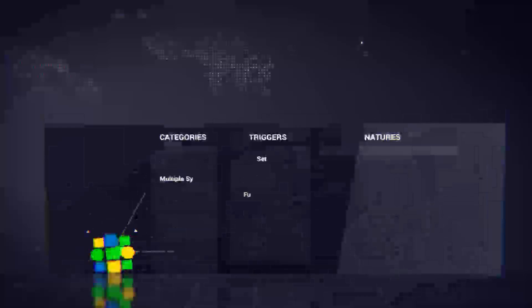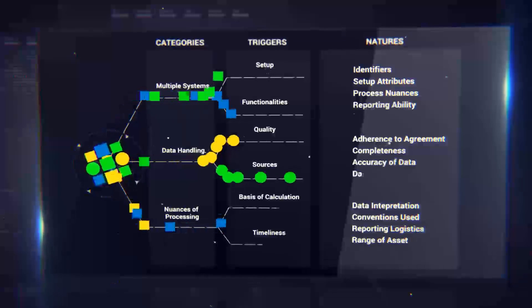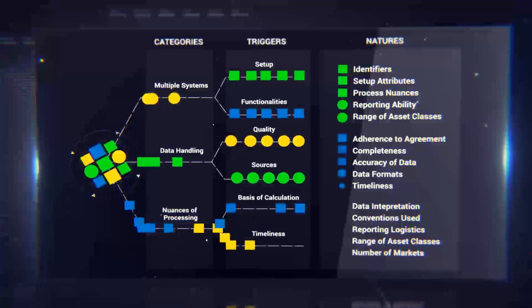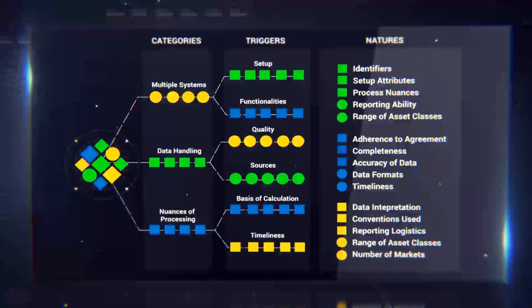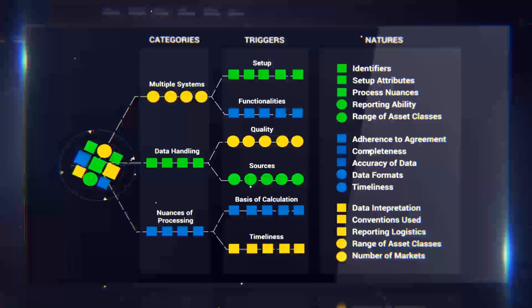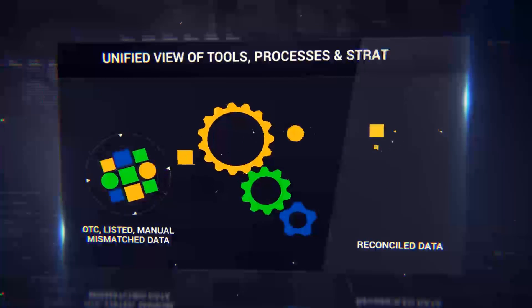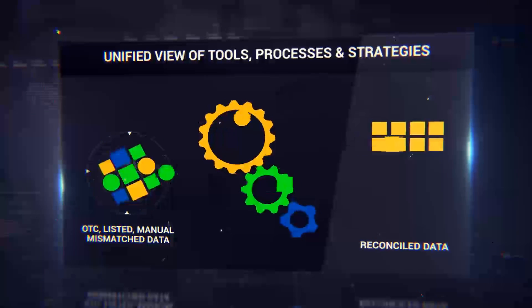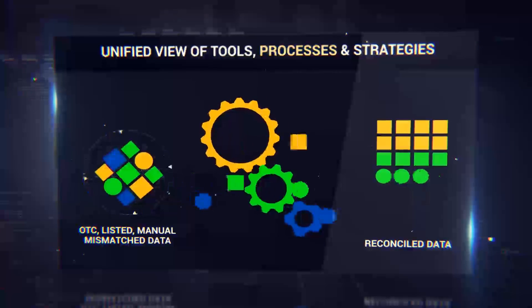Our experience shows robust reporting is best achieved via reconciliation that includes a qualitative structure to analyze breaks into categories, triggers, and natures, and incorporates resources to resolve breaks at the source. Analysis starts with a simplified exception management rule-based process that provides a unified view of tools, processes, and strategies.